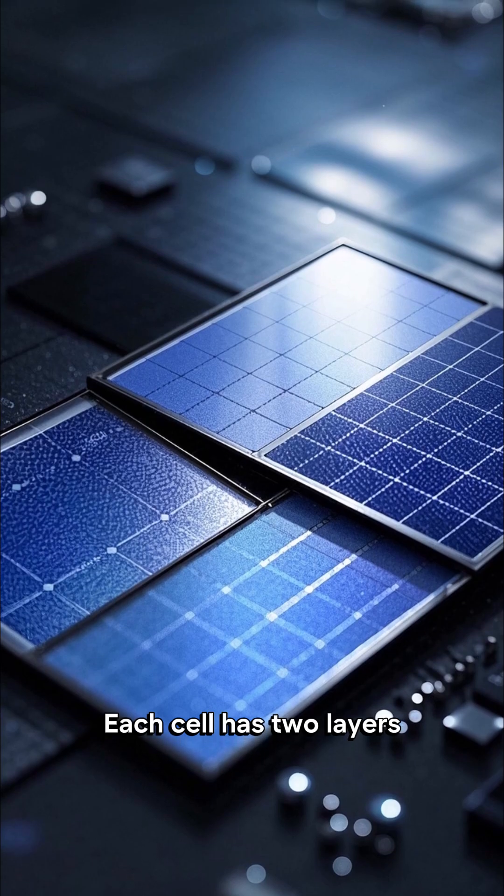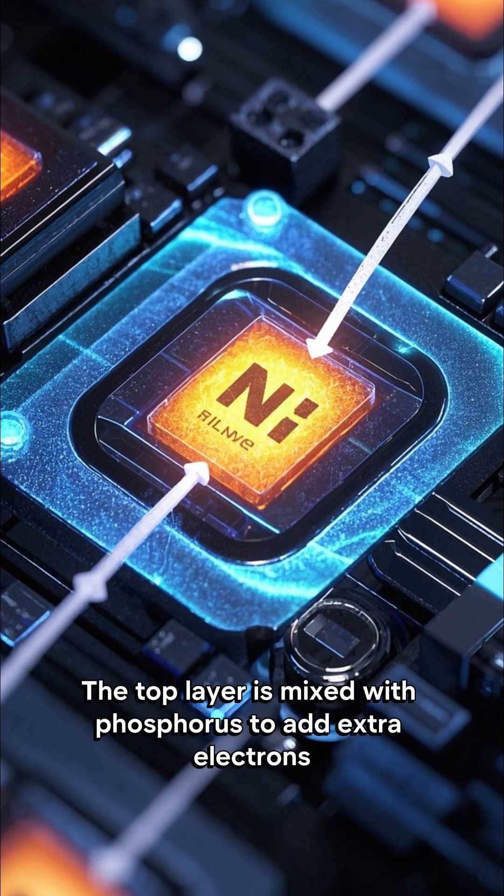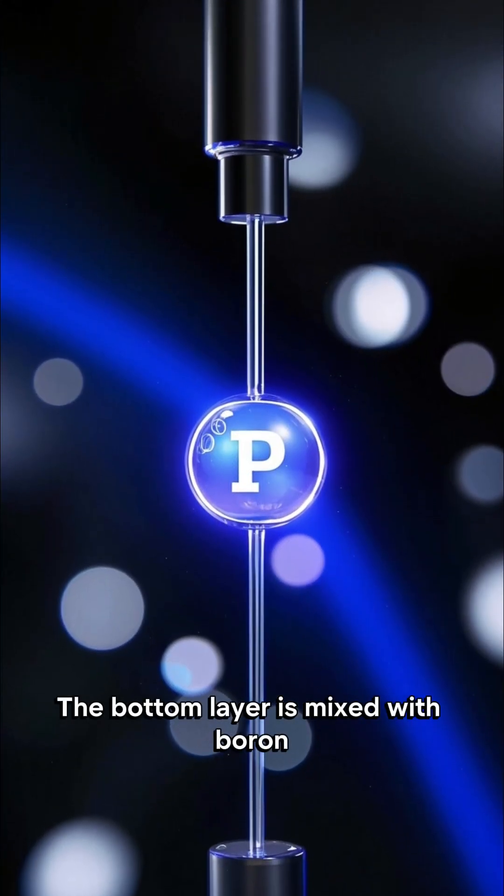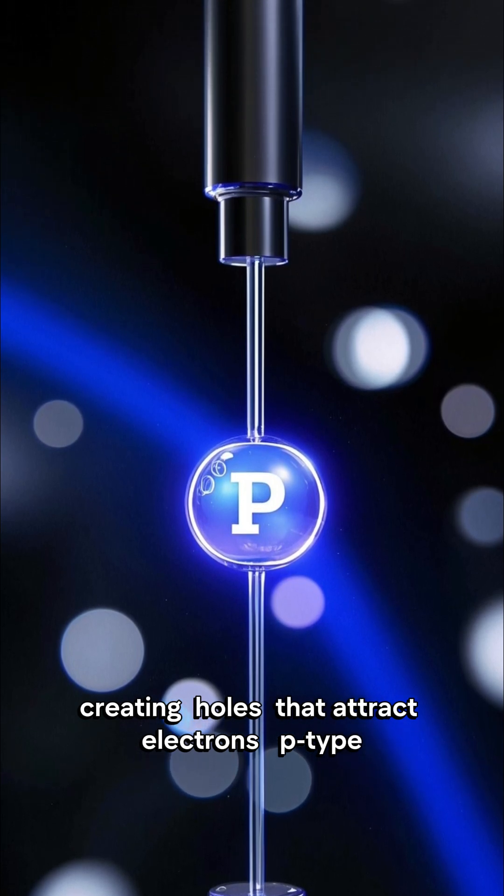Each cell has two layers. The top layer is mixed with phosphorus to add extra electrons, called n-type. The bottom layer is mixed with boron, creating holes that attract electrons, p-type.